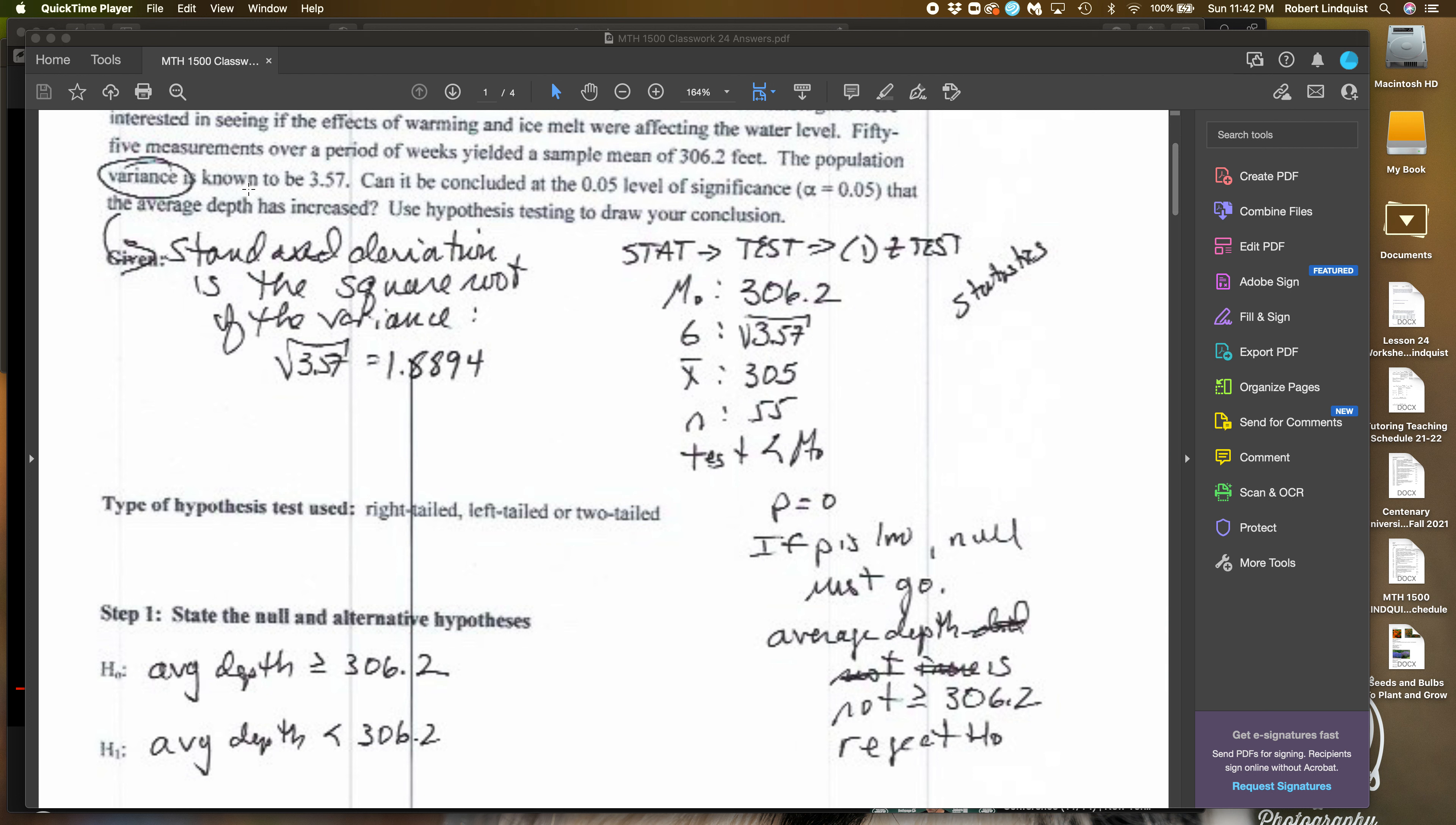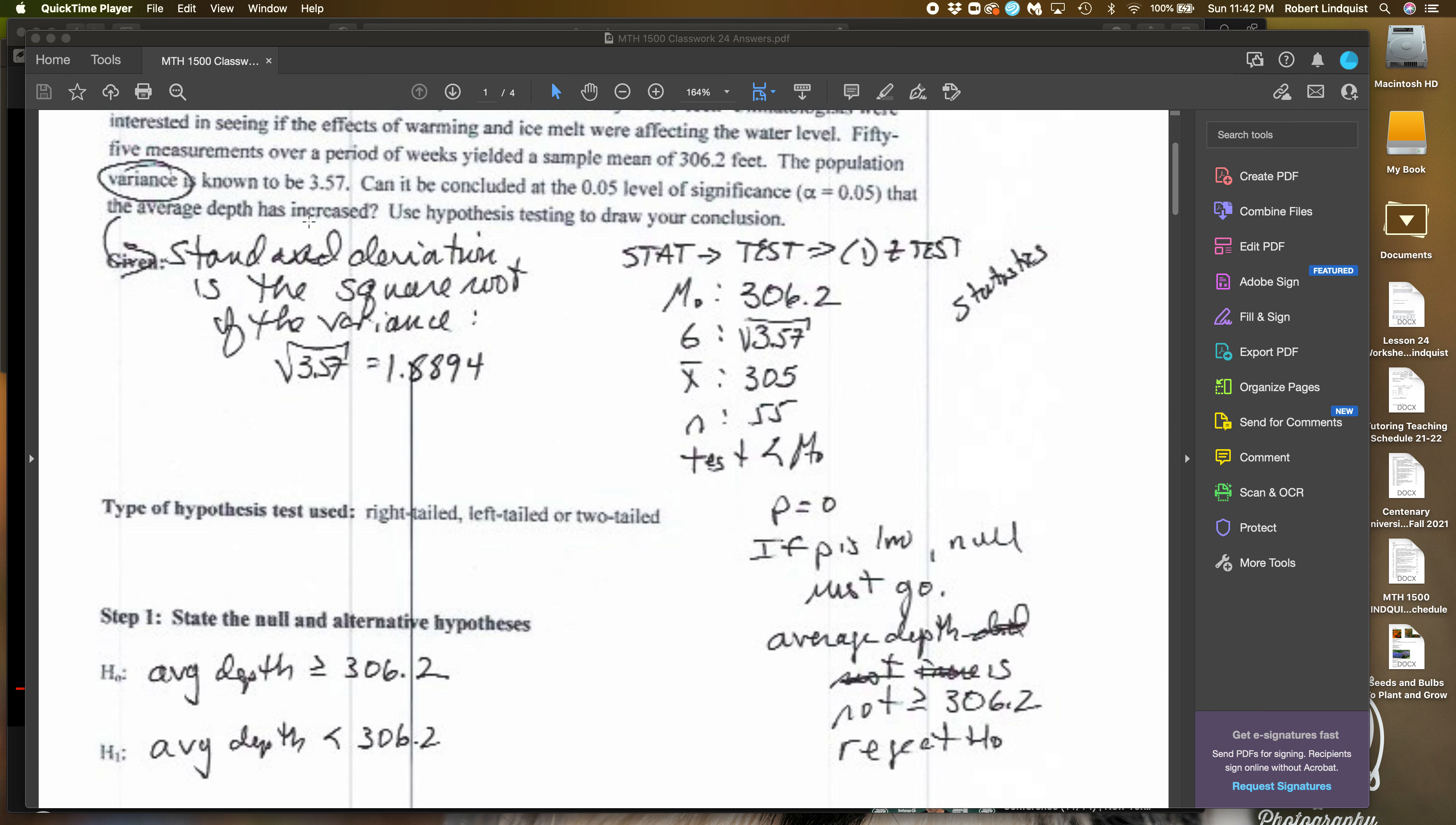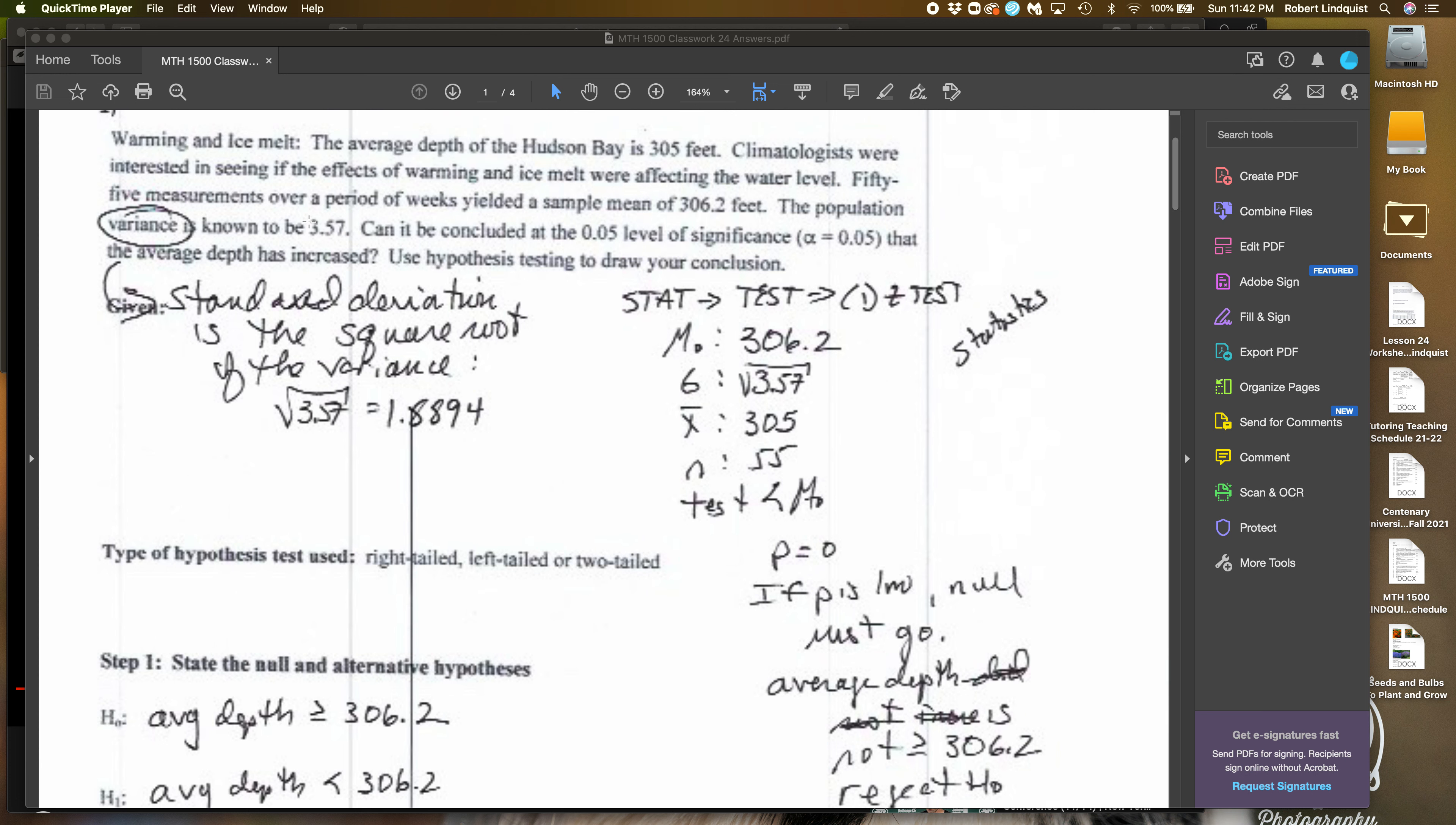So the first thing I said is that what they're looking to conclude here is that the effects of warming in the ice melt made the depth increase.